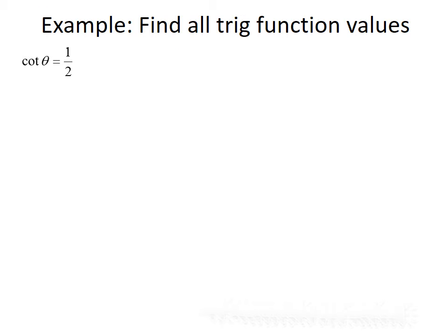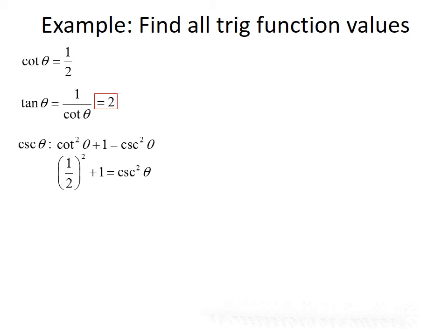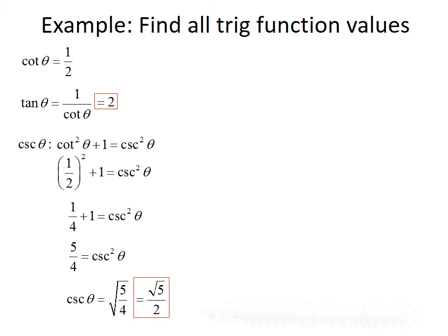Let's look at another example. This time, we want to find all trig function values given that cotangent of theta equals 1/2, and we'll use identities. Starting with tangent: from the reciprocal identity, tangent of theta equals 1 over cotangent theta, so the reciprocal of 1/2 is 2 — tangent of theta equals 2. Now let's find cosecant using the Pythagorean identity: cotangent squared of theta plus 1 equals cosecant squared of theta. Plugging in 1/2: (1/2) squared plus 1 equals cosecant squared, giving 1/4 plus 1. Rewriting 1 as 4/4 and adding gives 5/4 equals cosecant squared. Taking the square root gives cosecant of theta equals root 5 over 2.